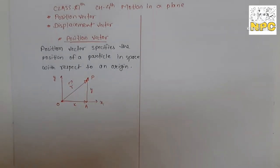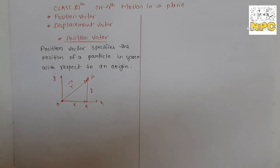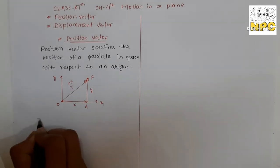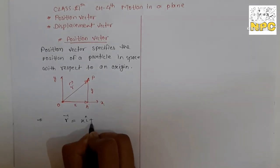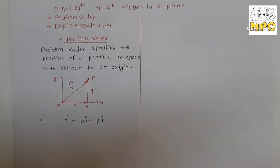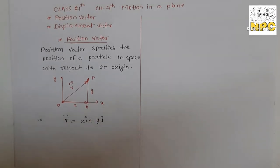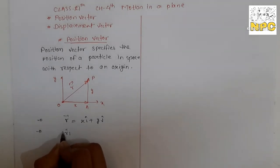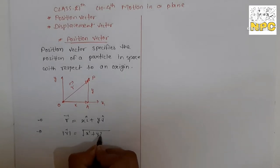We denote this as r vector. This is called the position vector. We can say that r has two components: x along x — that is x times i-hat — and y along y — that is y times j-hat. Because the unit vector in the x-direction is i-hat, and the unit vector in the y-direction is j-hat. So we define the position vector as r = x·i-hat + y·j-hat. Writing only x or only y gives you magnitude only, but we need the unit vectors. The magnitude of r is: |r| = √(x² + y²).